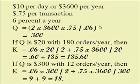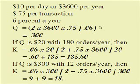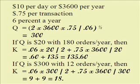We compute two times $3,600 times $0.75, divided by 0.06, and take the square root — that gives us $300 as the optimal amount. If your current policy is $20 each time, you do it every two days or 180 times a year, costing $135.60 per year. The optimal policy of $300 each time — every month or 12 times a year — costs only $18, and notice the two components are $9 and $9, confirming we did it correctly.